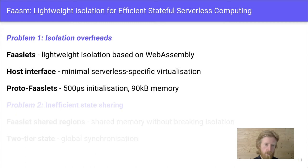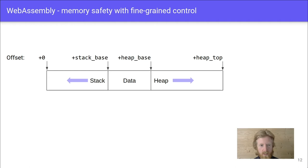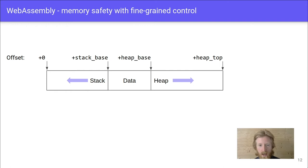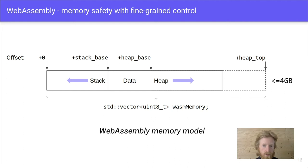FASlets use WebAssembly for memory safety. WebAssembly uses a simple linear memory model where all addresses are expressed as offsets from zero. The stack, data, and heap all exist within this linear memory, which can grow up to four gigabytes. Because this is just a linear array of bytes, we can hold it in a standard vector and manipulate it to get the fine-grained control over memory that we want — ultimately giving us the flexibility to start sharing memory between functions.